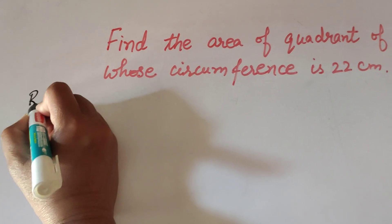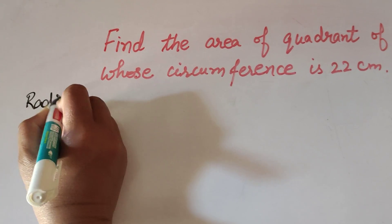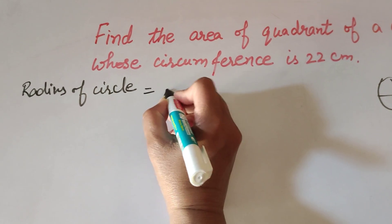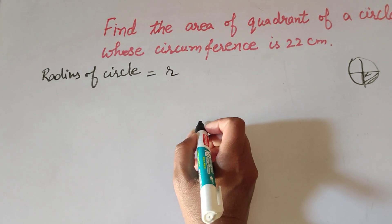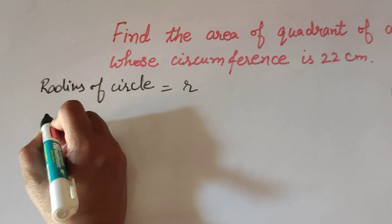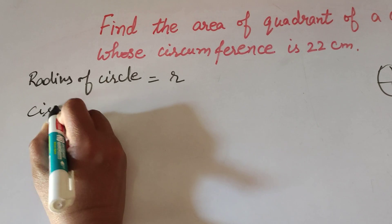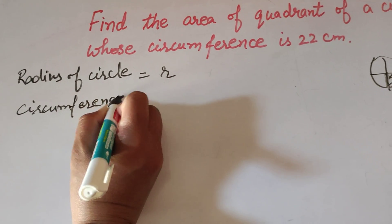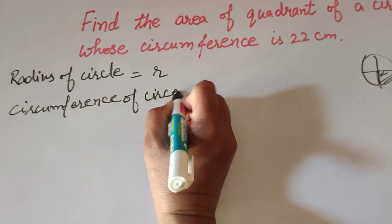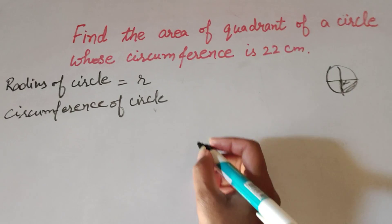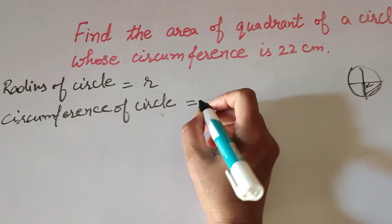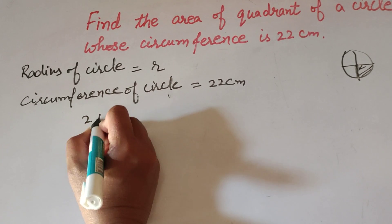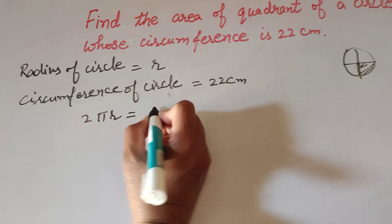To find the area of the quadrant we need to find its radius, so first we find the radius of the circle. We suppose the radius is r. Given is the circumference of circle, which is 22 cm. We know the formula to find the circumference of circle: 2πr = 22.